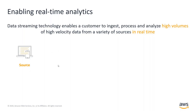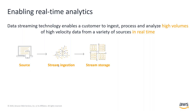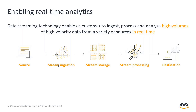The first component is that of the source. As an example, you can have clickstream data coming from mobile devices and web applications as a source. You then have the stream ingestion layer, where you could have an app tier that is collecting source data, such as clickstream data, and then publishing it to the stream storage layer. In our case, that would be Kinesis Data Streams. And then there's the stream processing layer, and lastly, there's the destination.